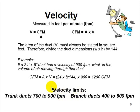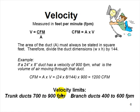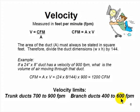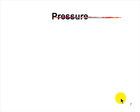Velocity limits on ductwork: trunk ducts — main rectangular or round trunk ducts — should be kept between 700 and 900 feet per minute for a good system. At 700 FPM you'll have decent projection out of the registers into the room. Above 900 FPM you'll start to get noise from moving the air. Branch ducts should be kept between 400 and 600 FPM. Below 400 FPM, you won't feel the air coming out of the register. Above 600 FPM, you'll get noise at the register or grill.